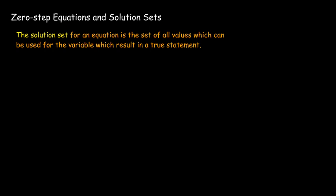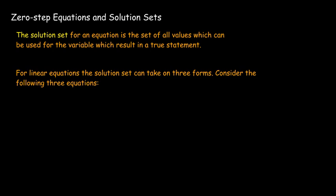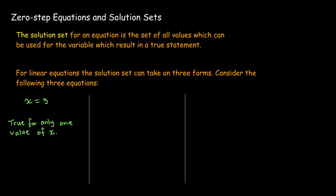For linear equations, the solution set can take on three forms, and we can show that with the following three equations. Consider x equals 3. This equation is solved — the value of x is 3. It's only true when x equals 3, for one value of x. The solution set is the set which contains the number 3 and nothing else.